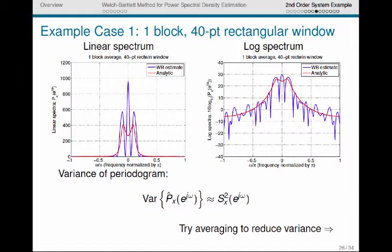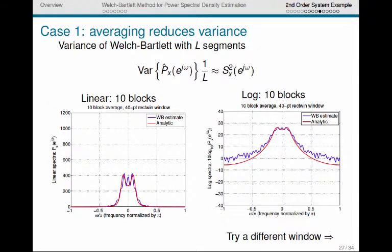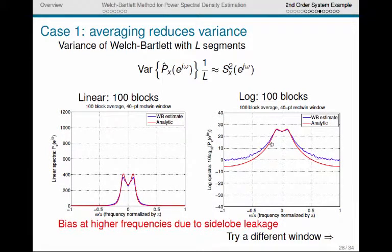And indeed, with one block, this is essentially the periodogram. And the variance of the periodogram is about equal to the squared value of the power spectral density we're estimating. So that's pretty high variance. The variance is on the order of the square of the quantity that we're estimating. So we can do what Welch-Bartlett suggest and try averaging to reduce the variance. So the variance of Welch-Bartlett with L segments will be approximately equal to sx squared e to the j omega over L. And so if we average over 10 blocks, this is the result in the linear case and the log of that. And if we average over 100 blocks, we get an even smoother result with lower variance. Now, the thing you notice here, though, is that we have this bias in the spectrum at higher frequencies.